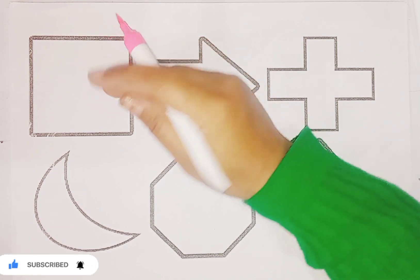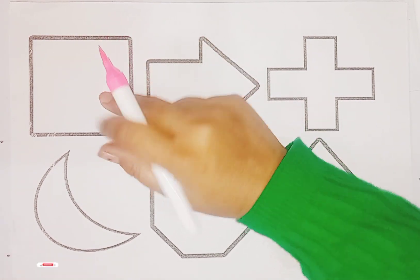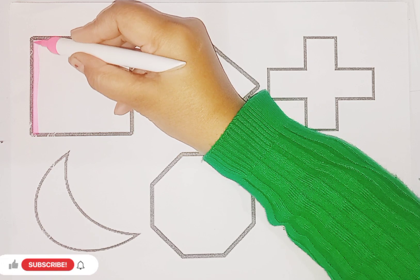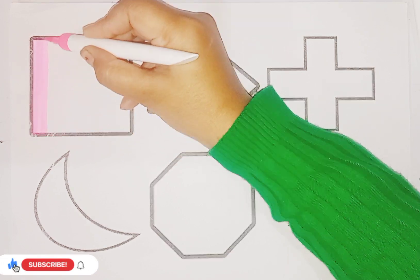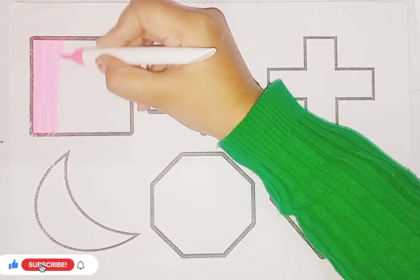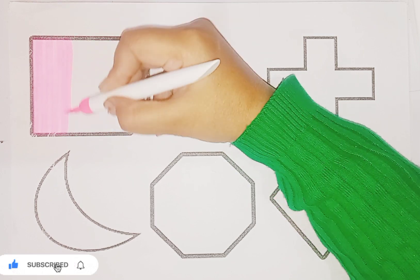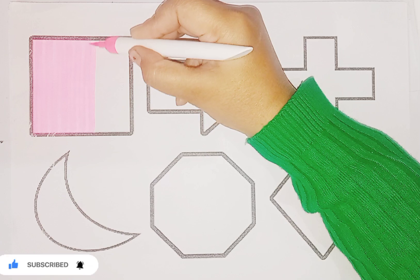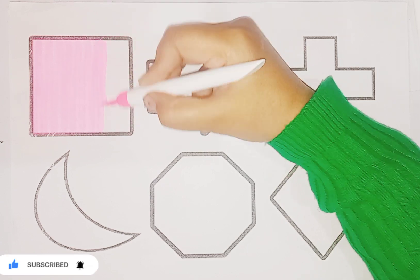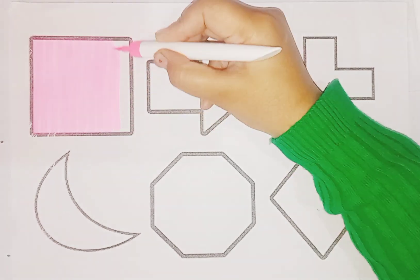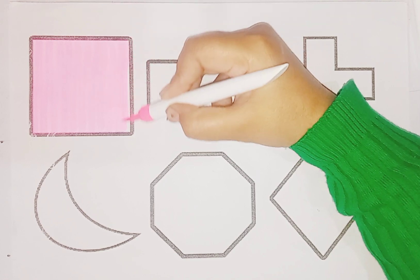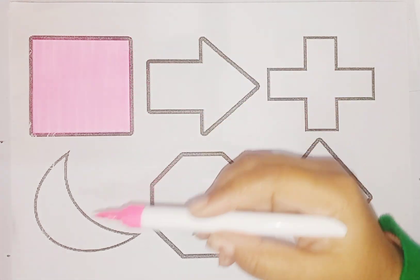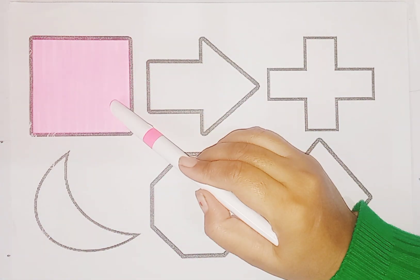Square. Which shape kids? Square. And we do pink color in square shape. Square.